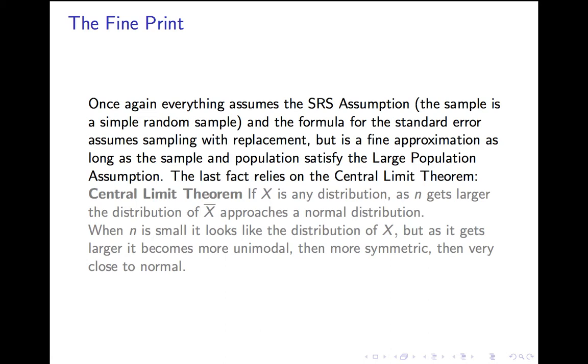Just like last time, those three facts are based on three assumptions. The first assumption, just as before, to do any of this, you have to assume that the sample is a simple random sample. So assumption A, SRS. The formula for the standard error is assuming you're sampling with replacement. That's generally not true, but it's good enough if your population is very large. So our second assumption, assumption B, is that the population is at least 20 times the sample size. Exactly the same large population assumption as before.